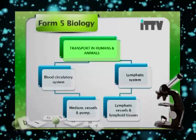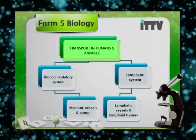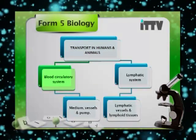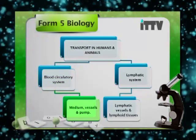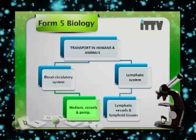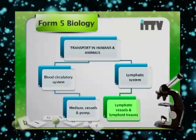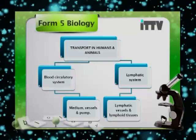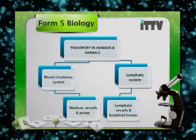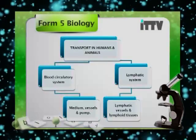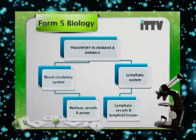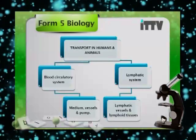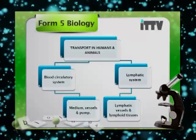There are two important systems in transport in humans and animals. One is the blood circulatory system, which consists of a medium, vessels, and a pump. The other system is the lymphatic system, which comprises lymphatic vessels and lymphoid tissues. The blood circulatory system is the main transportation system to distribute all the required nutrients and gases to the organs, tissues, and cells while eliminating toxic waste. The lymphatic system is a major transport system in defense.